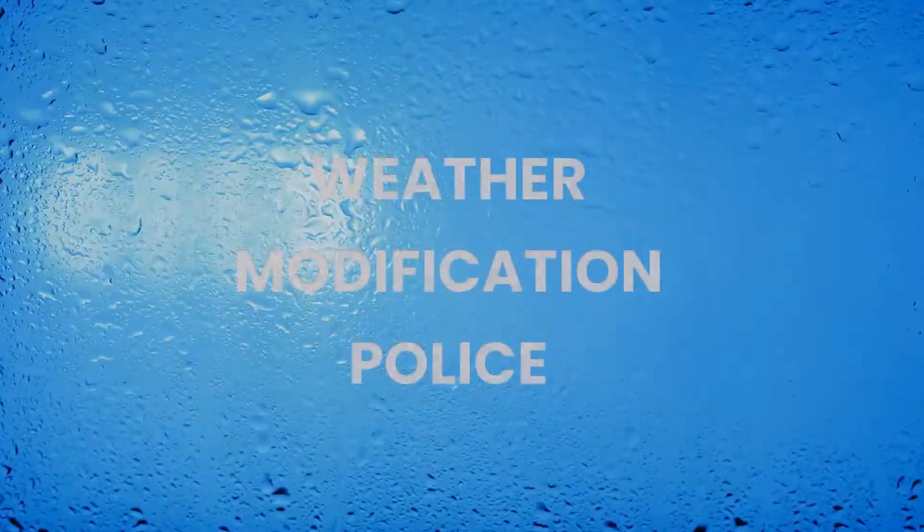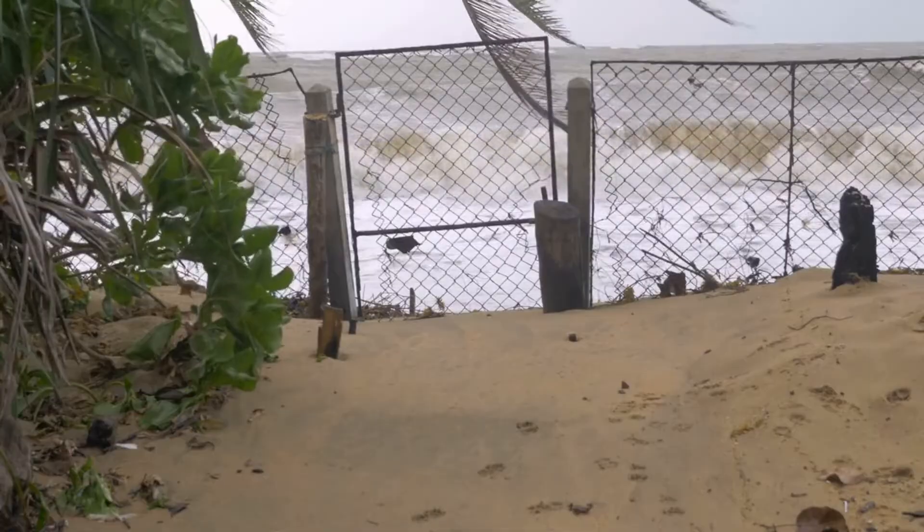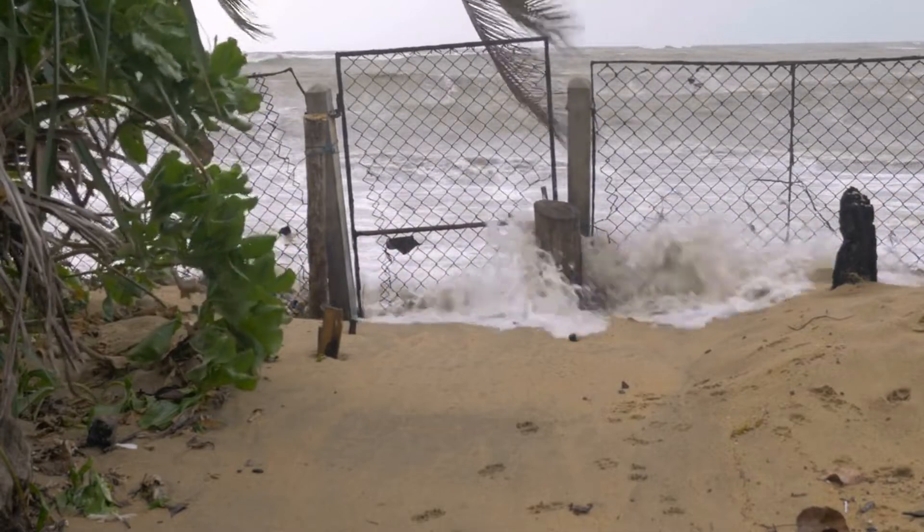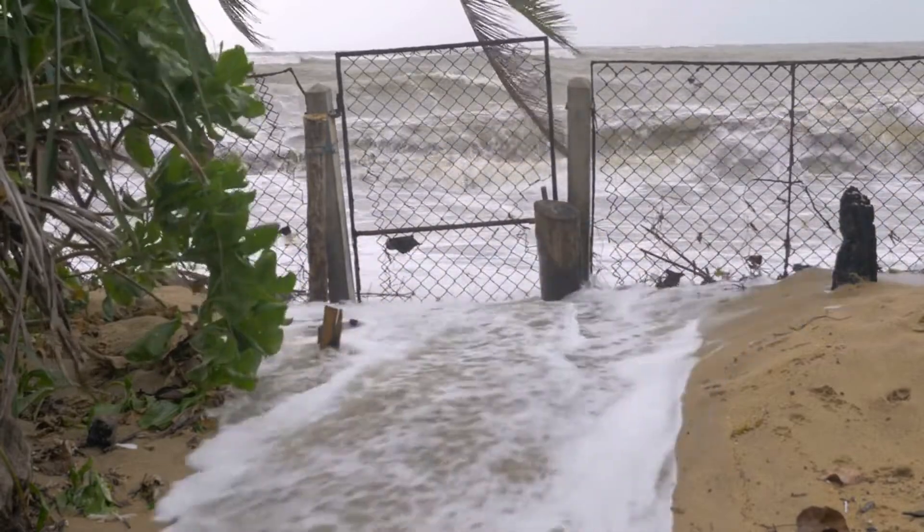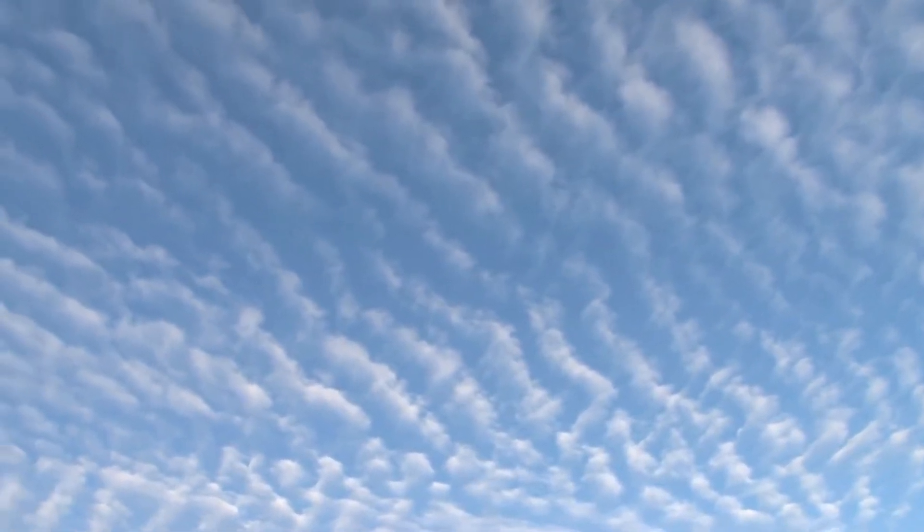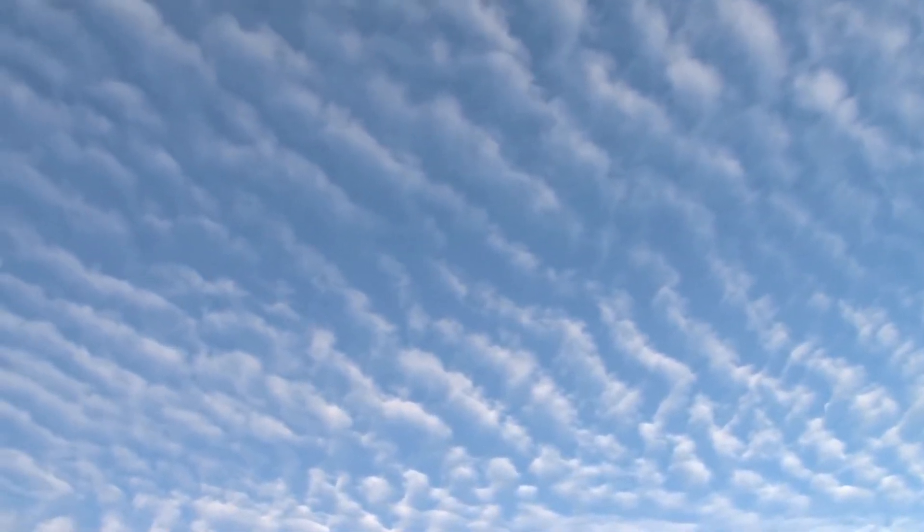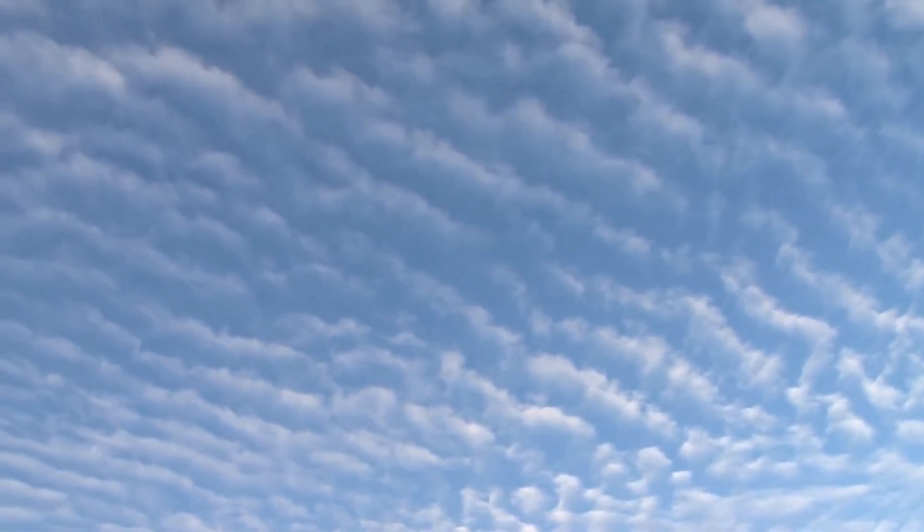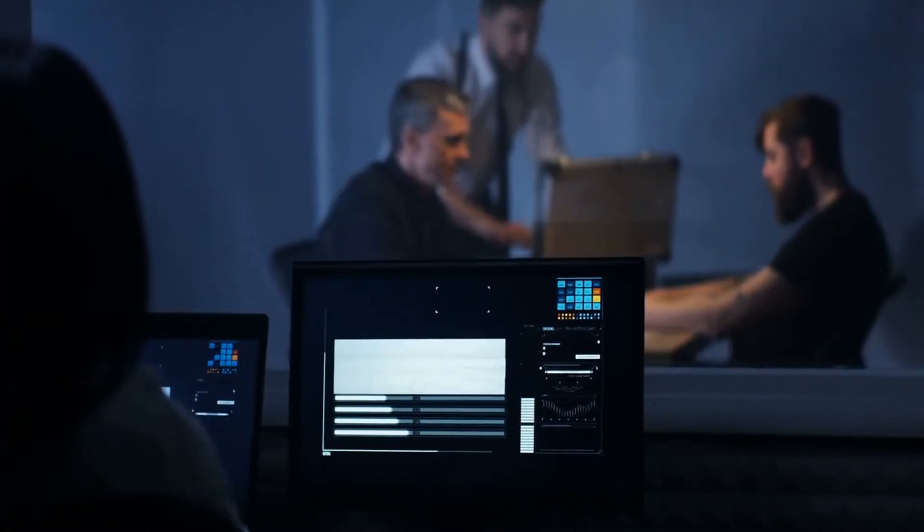Number 17. Weather Modification Police. Throughout history, there have already been attempts to alter weather patterns, an example of this being cloud seeding. If technology makes it possible to alter weather patterns in the future, and this has a negative effect on other parts of the world, law enforcement will be necessary to keep things under control. Enter the weather modification police.